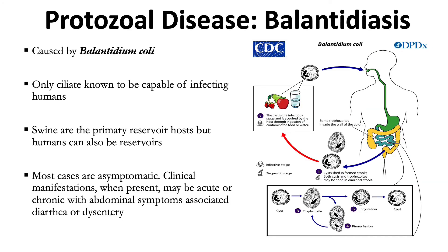Another protozoal disease is balantidiasis, caused by Balantidium coli — the only ciliate known to be capable of infecting humans. Swine are the primary reservoir host, but humans can also be a reservoir. Most cases are asymptomatic, but when present, clinical manifestations may be acute or chronic, with abdominal symptoms associated with diarrhea or dysentery.